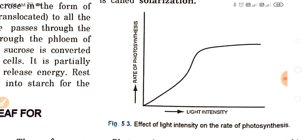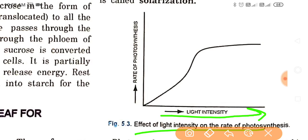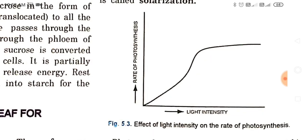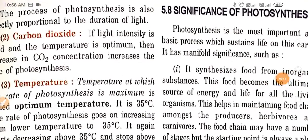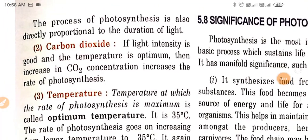As you can see from the graph showing the effect of light intensity on the rate of photosynthesis — as light intensity increases, the rate of photosynthesis also increases. Photosynthesis is greatly influenced by light quality. Blue and red regions of the visible spectrum are most effective, and green the least. The process of photosynthesis is also directly proportional to the duration of light.